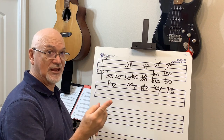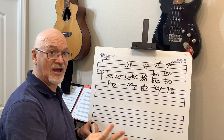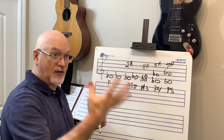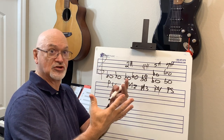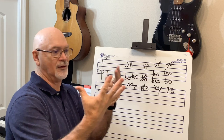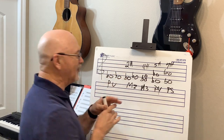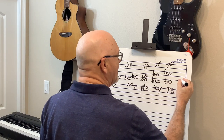Counting up: D-flat to D, to E-flat, to E, to F, to F-sharp, to G, to G-sharp — that's A-flat. Seven half steps total for the perfect fifth.